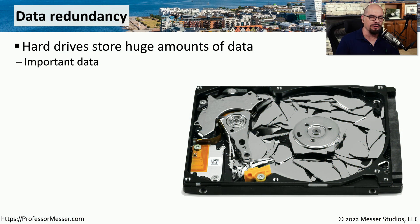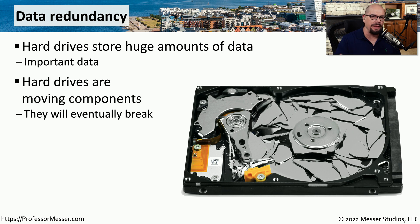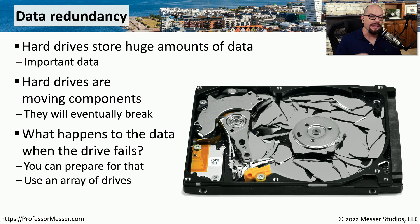It's not uncommon to use hard drives to store large amounts of information. Terabytes upon terabytes of your data can be stored on a single spinning drive. And of course, because there are moving parts inside of these drives, they will eventually fail. Fortunately, there are things you can do so that when a drive fails, your data will always remain available. In this video, we'll look at how RAID arrays can be configured to provide this type of data redundancy.